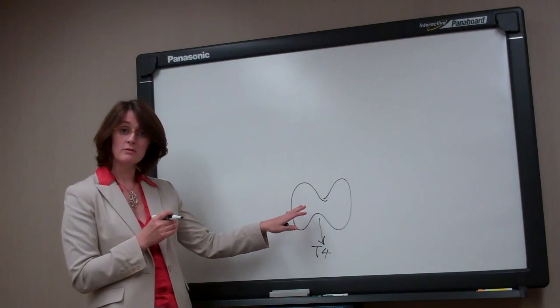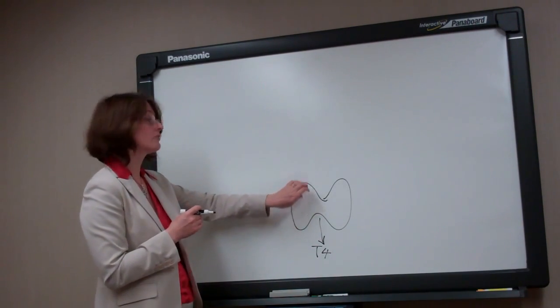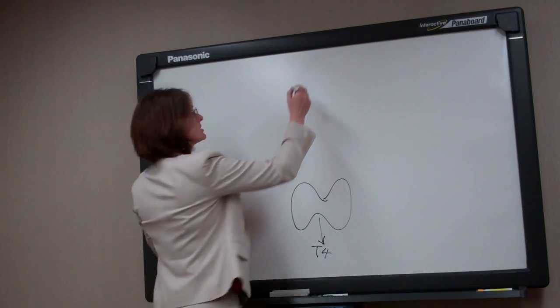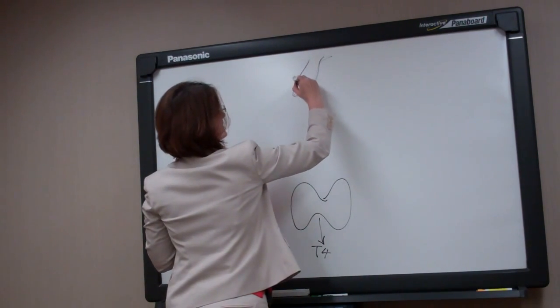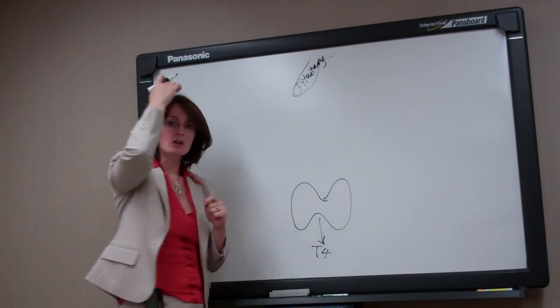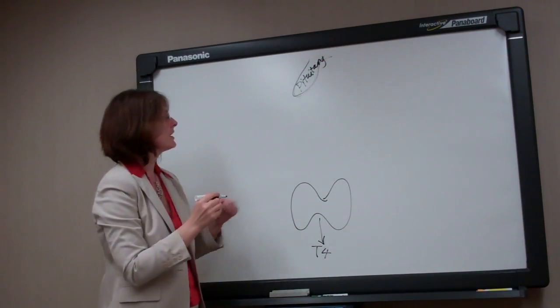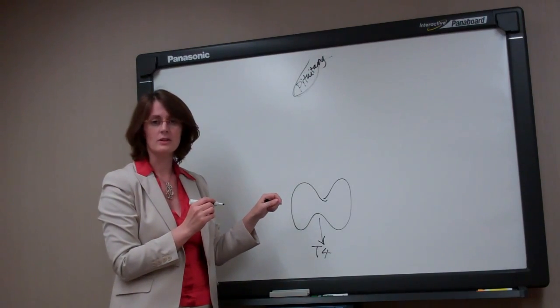And because it's such an important function, the body has the thyroid regulated not just by itself, but by a higher body called the pituitary gland. And the pituitary gland sits in the brain, in the center between the eyes, just behind the eyes and in the center. And the pituitary gland regulates lots of glands around the body, not just the thyroid gland.